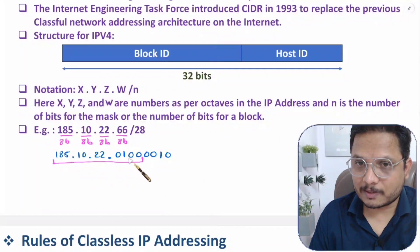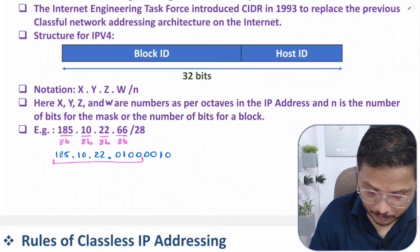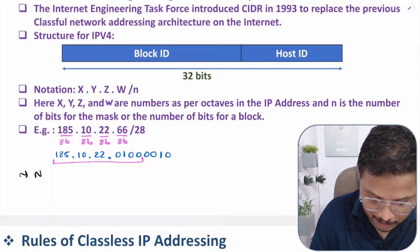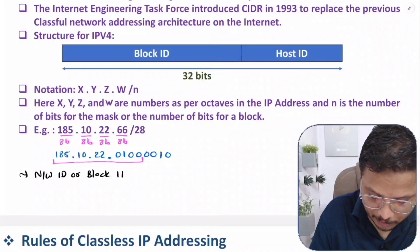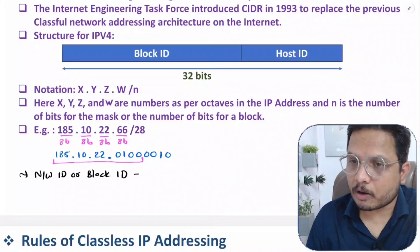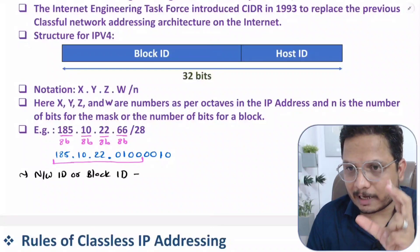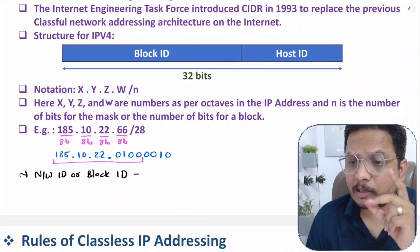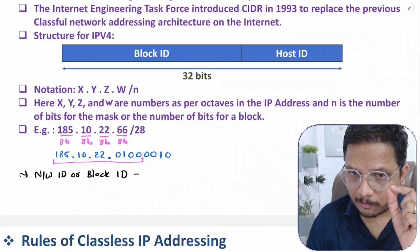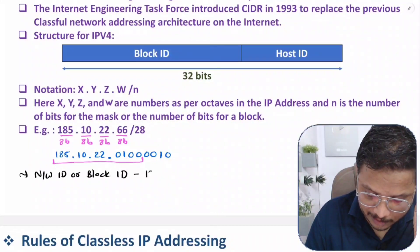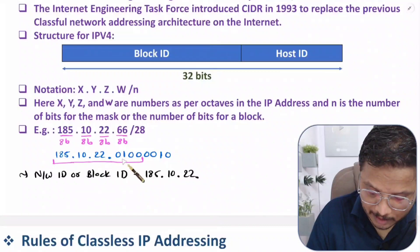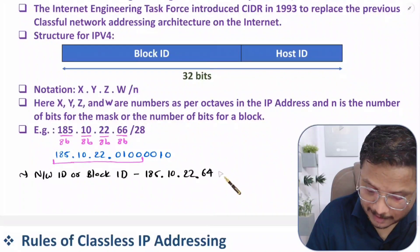Based on the 28-bit masking, we can identify the network ID, also called the block ID. The network ID or block ID is the lowest IP of the given block or network. So the first three octets stay as 185.10.22, and from the last octet we keep only the masked portion — which is 64 — making the network ID 185.10.22.64/28.